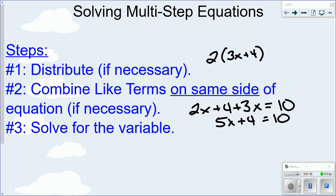Now it says on the same side of the equation, what I mean by that is you can't combine this 4 with the 10, because they're on opposite sides of the equal sign. So you can only combine like terms that are on the same side of the equal sign. And so once you've done step one and step two, at that point, you should have either a one or a two step equation left. And that's just using opposite operations to solve for the variable.